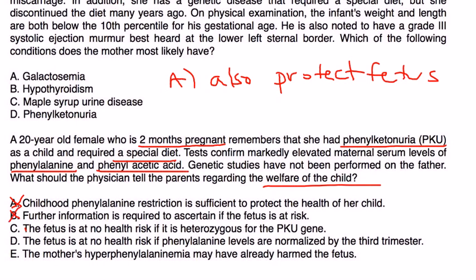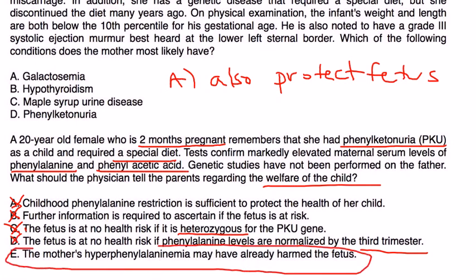Choice C — the fetus is at no risk if it is heterozygous for the PKU gene — is not true. Even if the fetus is heterozygous, it cannot break down the excess phenylalanine transmitted via the placenta. Choice D — the fetus is at no risk if phenylalanine levels are normalized by the third trimester — is also not true, because most teratogenic damage occurs in the growing organs before the second month. By elimination, the answer is E: the mother's hyperphenylalanemia may have already harmed the fetus, which is correct because excess phenylalanine crosses the placenta and causes teratogenic effects.